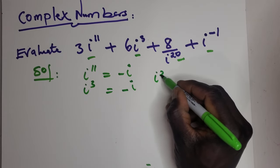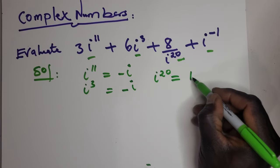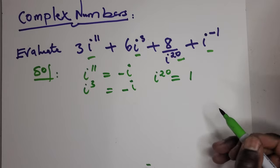Then i to the power of 20 is positive 1, but this one is a little bit tricky, so...